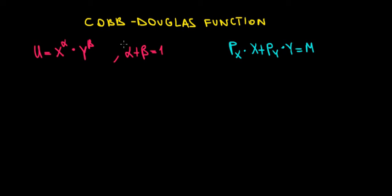Let's look at the concept of the Cobb-Douglas function in this video. We have a utility that depends on two goods, x and y, and we can see that this utility has exponents in it. Our goal in this series is to show that there is a relationship between these exponents and how much we invest in these specific goods.